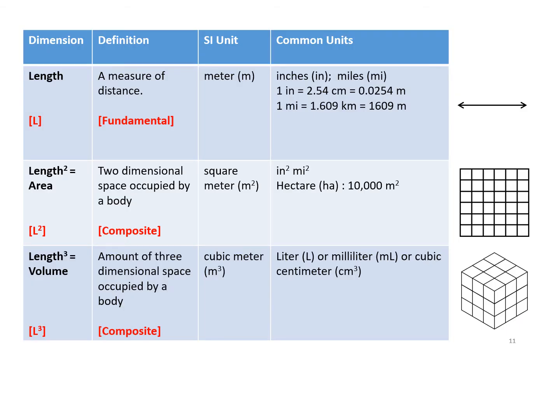Length is fundamental, area and volume are composite. It just so happens in this case that it's made up of multiple dimensions, and all those dimensions are the same, are length. But it doesn't have to be true. You can mix and match different dimensions to get new composite dimensions for your calculation.